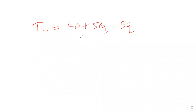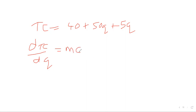If we differentiate the total cost of 40 plus 50Q plus 5Q squared, what will it be called? Marginal cost. So can somebody differentiate it? It is dTC/dQ. If we differentiate: the 40 drops out, 50Q gives 50, and 5Q squared gives 10Q. So marginal cost equals 50 plus 10Q.